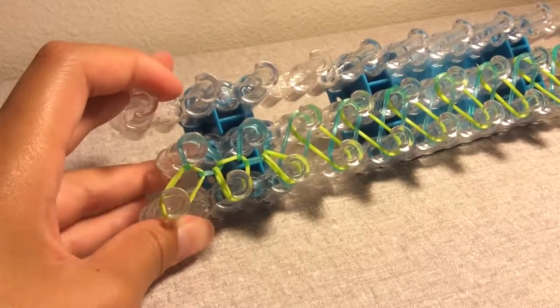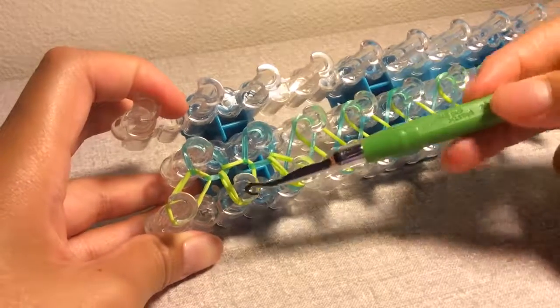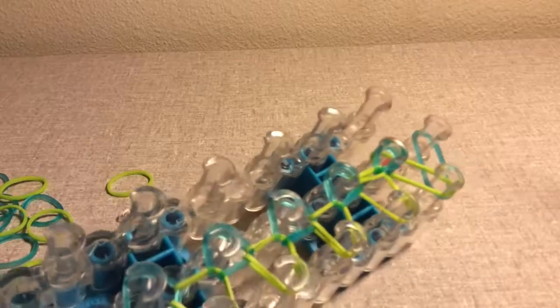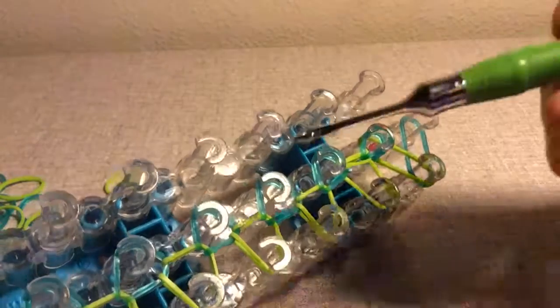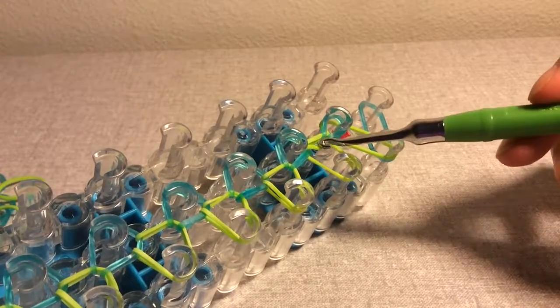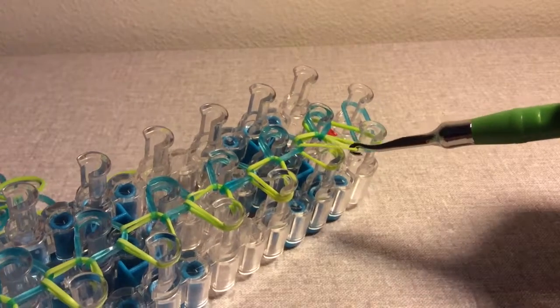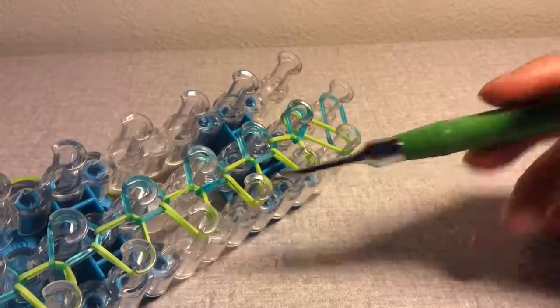And make sure that when you're done, this is what it should look like. This is what the pattern should look like. If it doesn't look like this, then something is wrong. So I want to show you guys a problem that might happen to you while you're looming this bracelet. And one of the bands fall off like that. You want to just bring this band here and just put it back on this pin here. And everything should be fine.